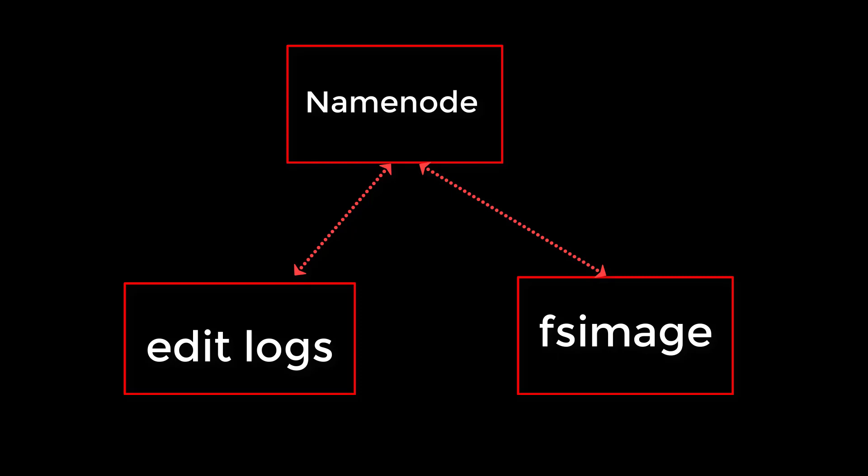The edits file records whatever changes happened to the namespace after taking the last FSimage. Hadoop makes use of these two files for reconstructing the name node while starting up — it loads the FSimage into memory and applies the edits from the edit log files.